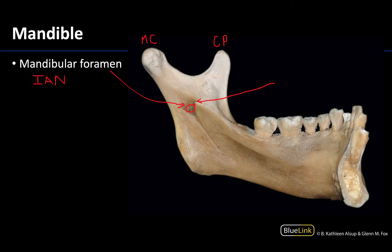This allows you to anesthetize all of the teeth on one side. On this particular one we're looking at the left side, so the left inferior alveolar nerve will enter into this region. If you enter anesthetics here it would knock out all of the left mandibular teeth in that quadrant.